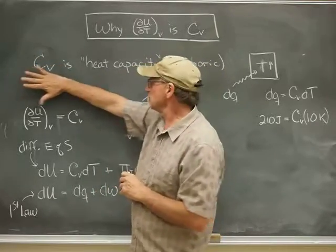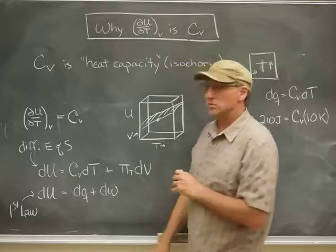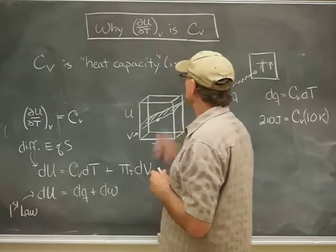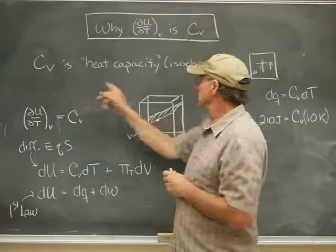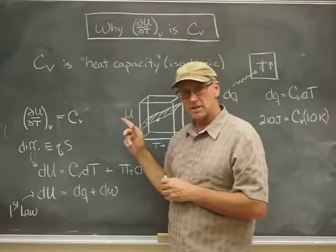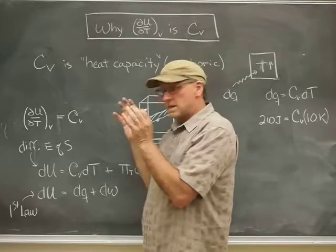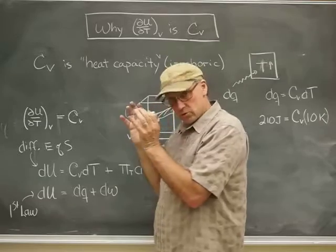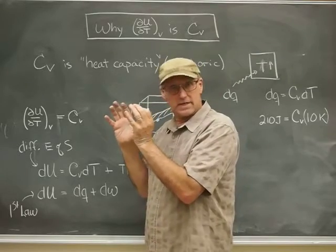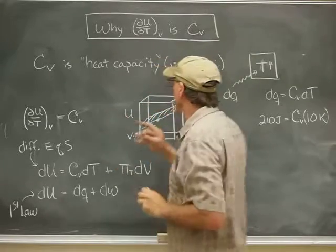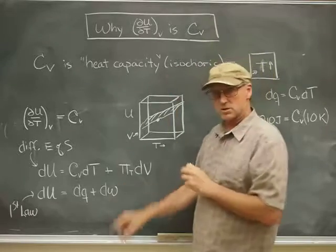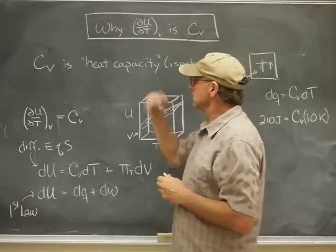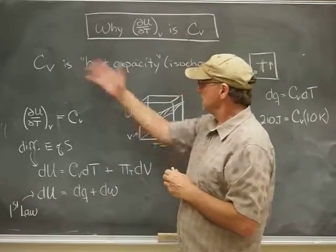CV is what we call a heat capacity. The subscript V means we're thinking about a heat capacity when we heat up a system but maintain its volume constant. At constant volume, we use the word isochoric. So the isochoric heat capacity is CV.